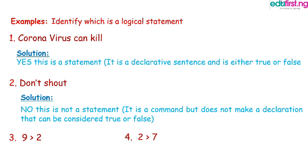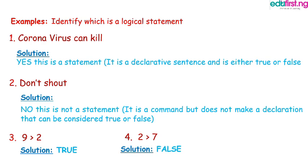Number 3: 9 is greater than 2. Is 9 actually greater than 2? Yes! 9 is greater than 2. It has been proven over time that 9 is greater than 2, so it is a logical statement. Number 4: 2 is greater than 7. Is 2 greater than 7? No! So it is a logical statement because 2 can never be greater than 7. It has been proven over time. You can easily say this is either true or false, so it is a logical statement.